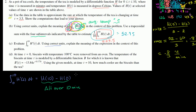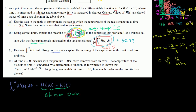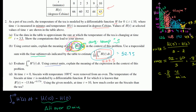We can actually evaluate it. We know what our temperature was after 10 minutes — h of 10 is 43 degrees Celsius. So this is 43. And from that, we're going to subtract our initial temperature at 0 minutes, which is 66 degrees Celsius. We're going to subtract 66 degrees Celsius.